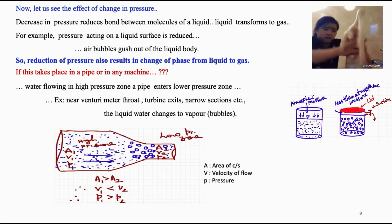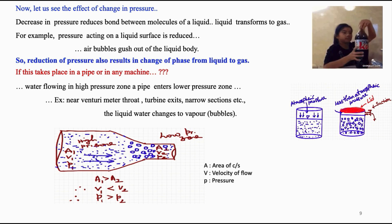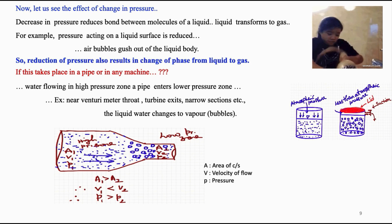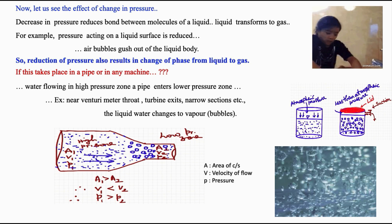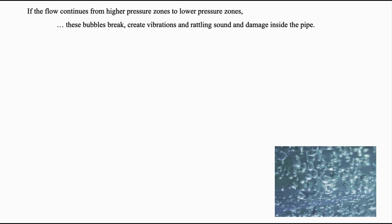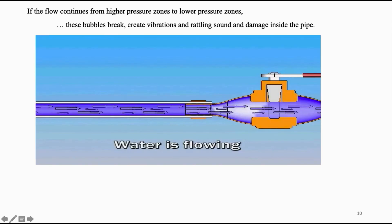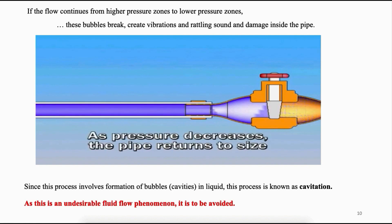As shown in the figure, flow takes place from a higher pressure zone to a lower pressure zone — best examples are flow through the throat of a venturimeter or flow at the exit of turbines and narrow sections. Here, water in liquid state gets transformed into gaseous state. Since the density of air is less than that of water, the volume abnormally increases once liquid becomes gas. As flow continues from higher to lower pressure zone, these bubbles break, create vibrations, rattling sound, and damage the inside of the pipe material. Since this process involves formation of bubbles — that is, cavities — in liquid, it is known as cavitation. This is an undesirable phenomenon and must be avoided while designing pipe networks or hydraulic machines.